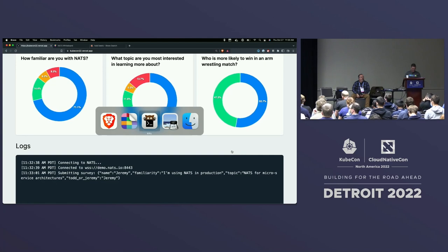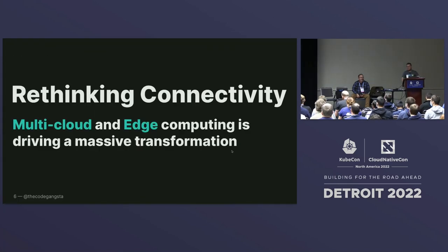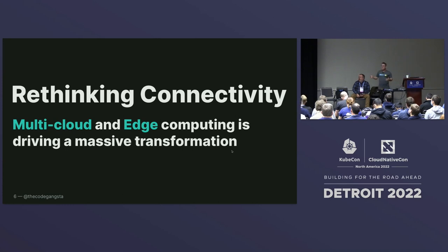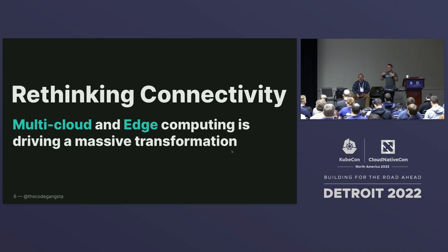Let's talk a little bit about NATS since we have a bunch of newbies in the room. At Synadia and at the core of the NATS project and its design is this idea about rethinking connectivity — meaning, what would the world look like if we rethought some of the core fundamentals about what it means for machines to talk to each other and what it means for users to interact with machines? And if we rethought that, what kind of new tooling and ideas would come out of it?